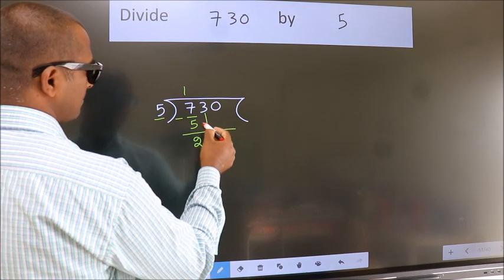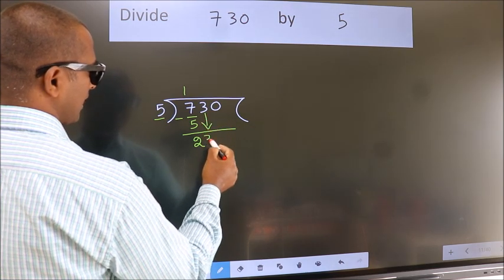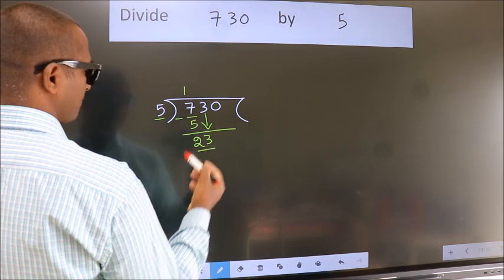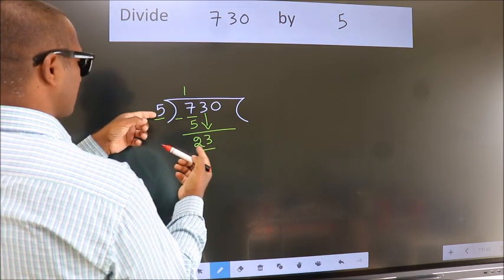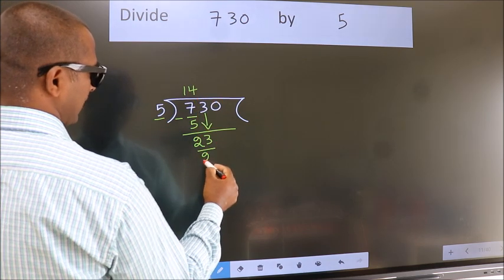After this, bring down the beside number. So, 3 down. So, 23. A number close to 23 in the 5 table is 5 fours 20.